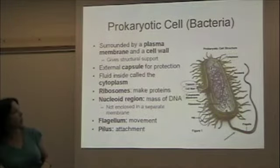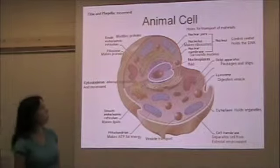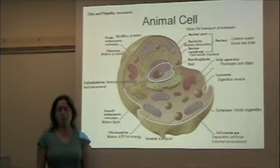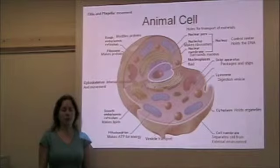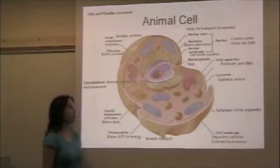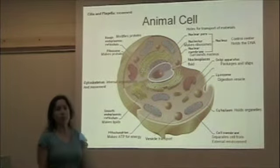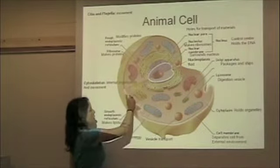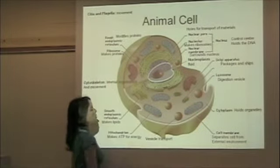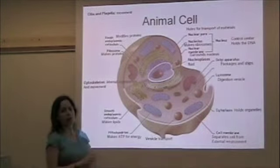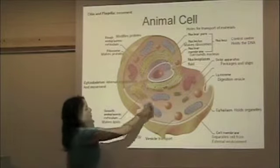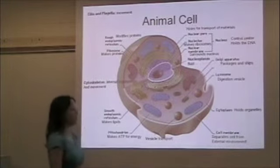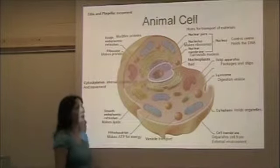We're going to compare the prokaryotic cell to a eukaryotic cell, the animal cell. This is much more advanced — it has multiple organelles — but it does have some similarities. For example, we still have a plasma membrane or cell membrane that separates the inside of the cell from the external environment. The fluid inside is still called the cytoplasm, and all of the organelles float around in that cytoplasm.